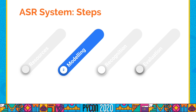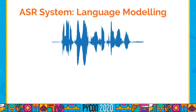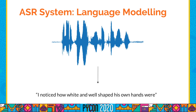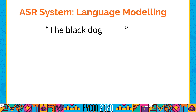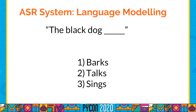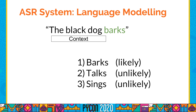Let's move on to the second component: the language model. We've seen the hidden Markov model that helps identify phonemes and words, but we need something to connect these words and recognize the full sentence — this is where the language model comes in. For example, given the sentence 'the black dog and a ___', we typically say the correct word is 'barks' because of the previous context. The language model provides a score or probability for the following word given the previous context.